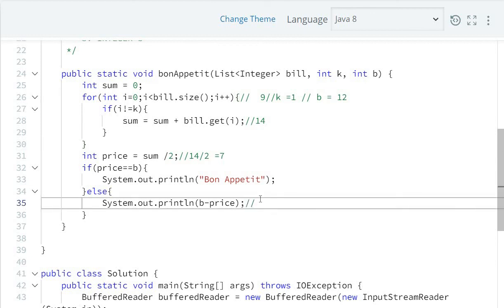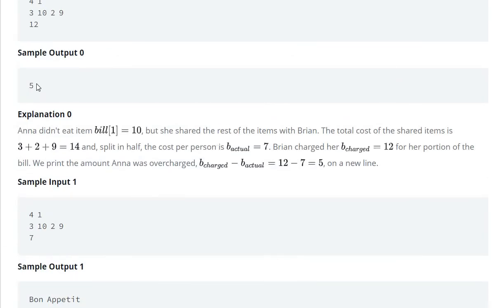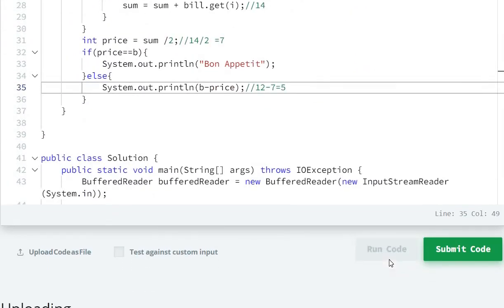So we'll print b minus price, which is 12 minus 7 equals 5. So 5 will be printed, and the output is 5. So now let us run and submit.